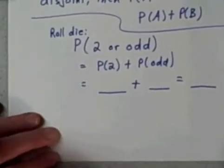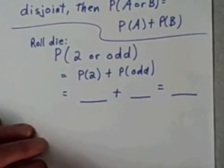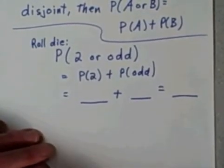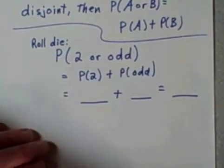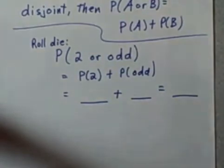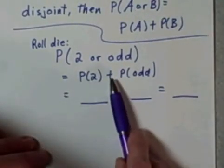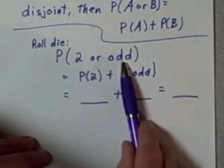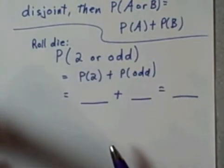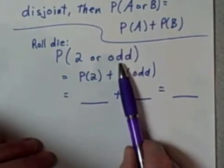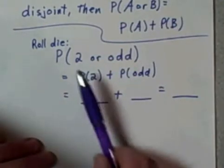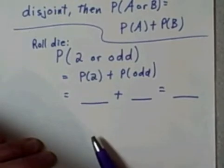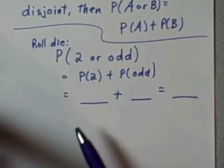For example, say we're rolling a six-sided die again, and I want to find the probability that I roll a two or else an odd number. By the formula, that is simply the probability of rolling a two plus the probability of rolling an odd number because these two events are disjoint. They can't possibly happen at the same time. If I roll an odd number, it can't possibly be two. If I roll a two, it can't possibly be odd.